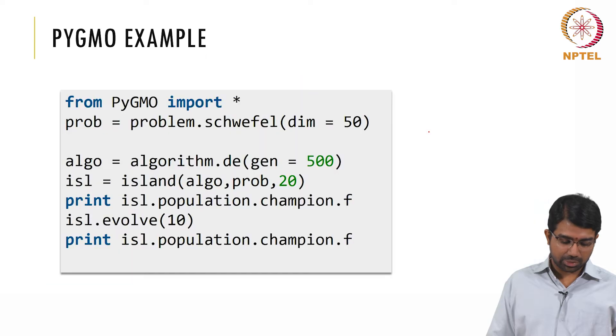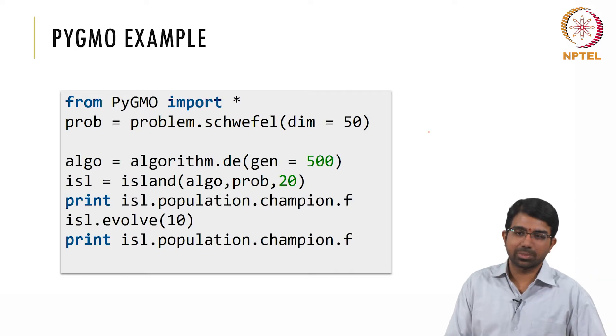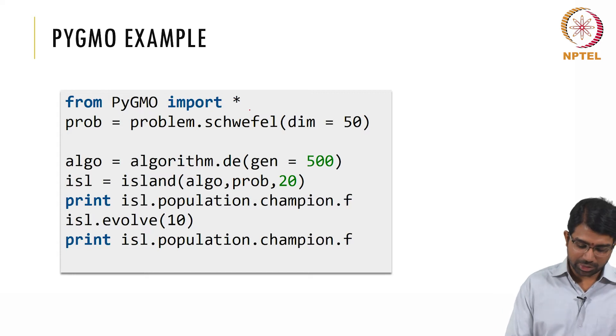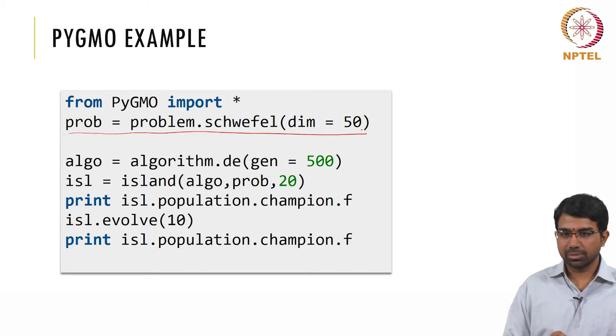There are a bunch of algorithms that are available and it is as simple as this to do Pygmo. Of course, you need to be familiar with Python. It basically says from Pygmo import everything and problem, this is a particular problem that is defined in Pygmo. This has to be replaced with your problem. You need to set up your parameter optimization problem here. And algorithm is algorithm.differential_evolution for 500 generations, create 20 islands, print island population champion function value.